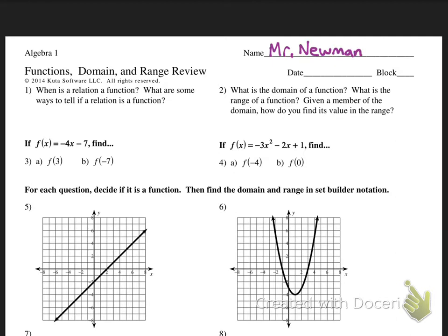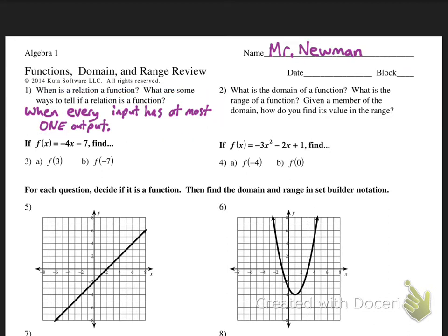First of all, when can you tell a relation is a function? Just remember it's when every input has at most one output. Some of you guys just remember that from the vertical line test, but I really want you to understand it at this level right here.